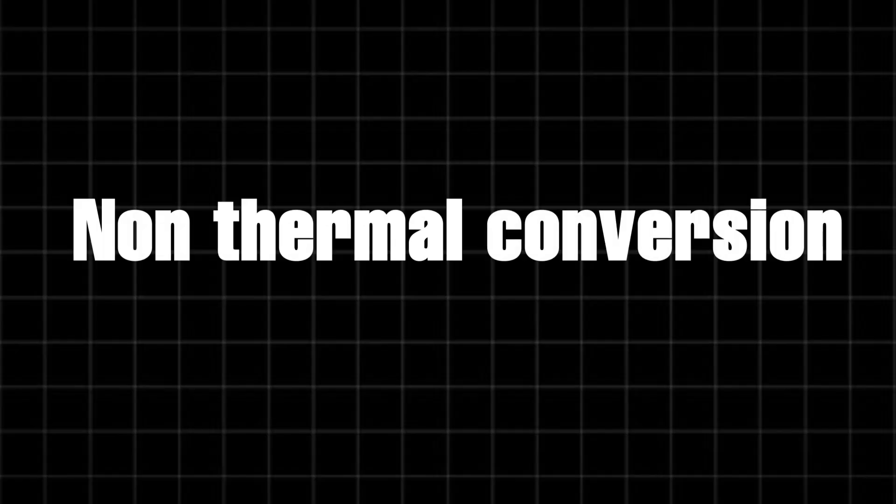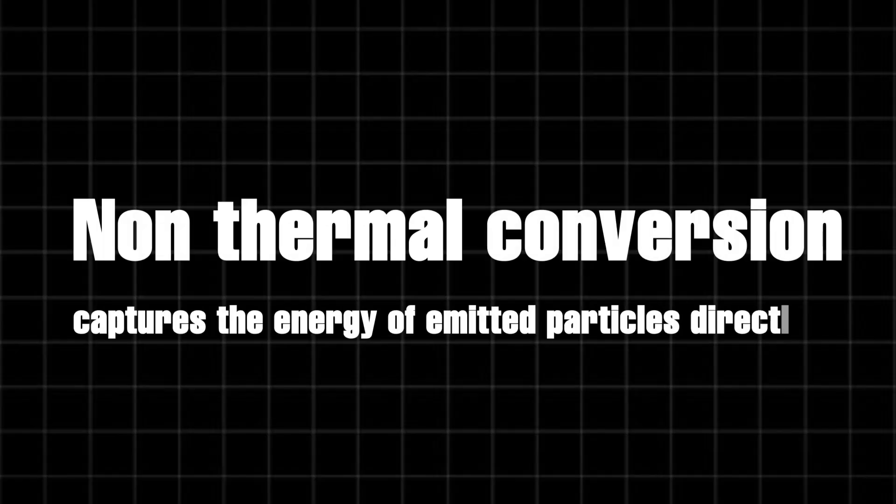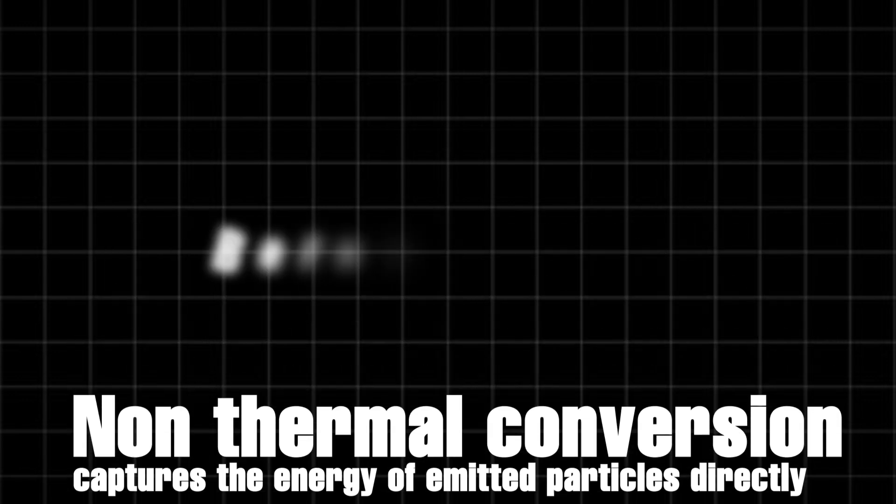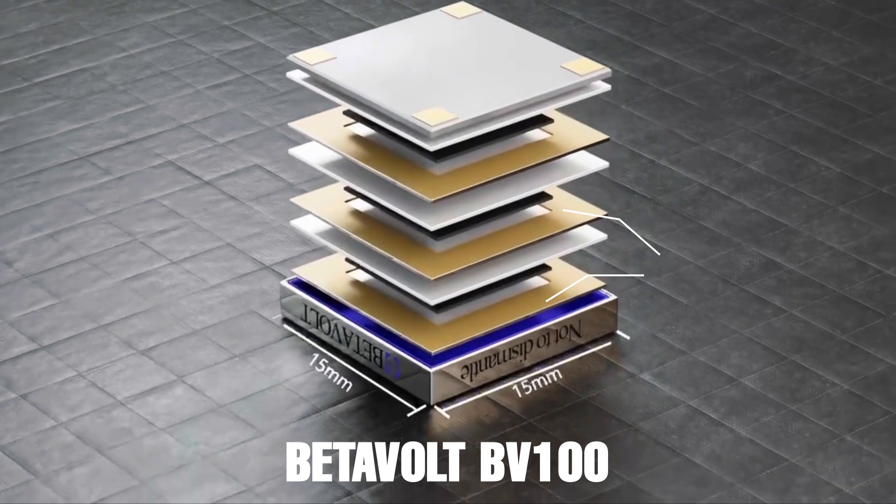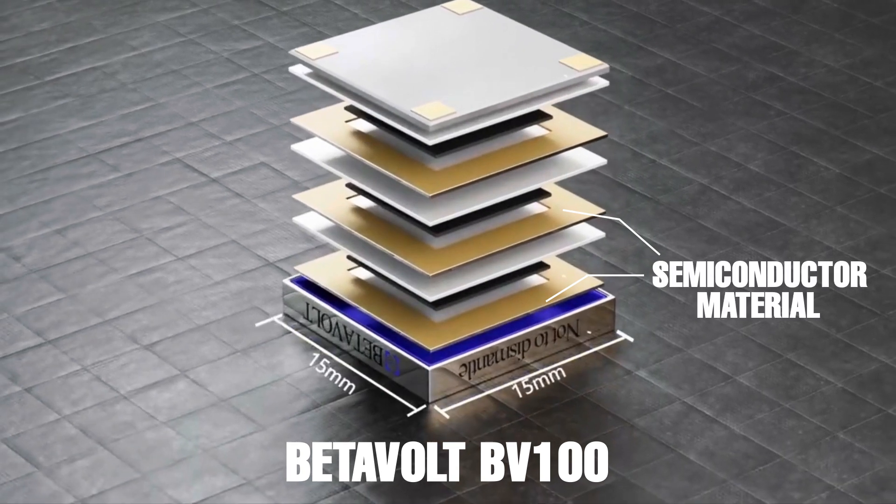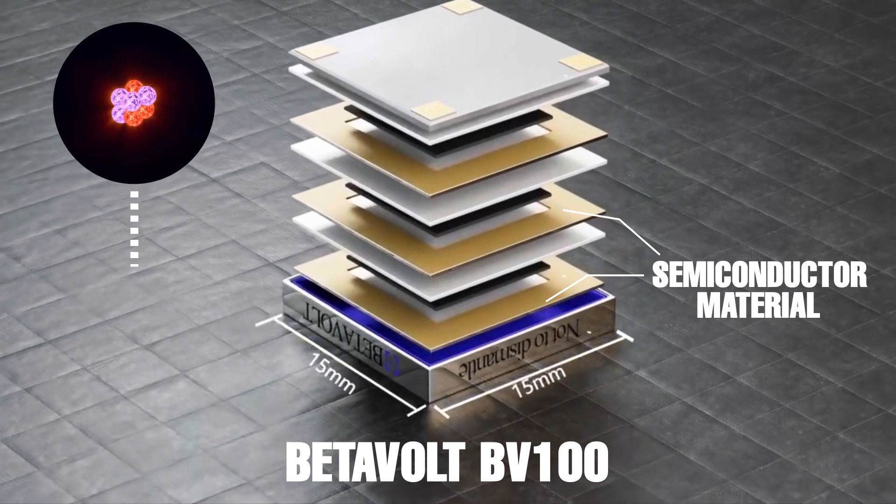Non-thermal conversion, on the other hand, captures the energy of emitted particles directly. Beta-voltaic cells, like the ones used in BetaVolt's BV-100, use semiconductor materials to convert beta particles into electricity.